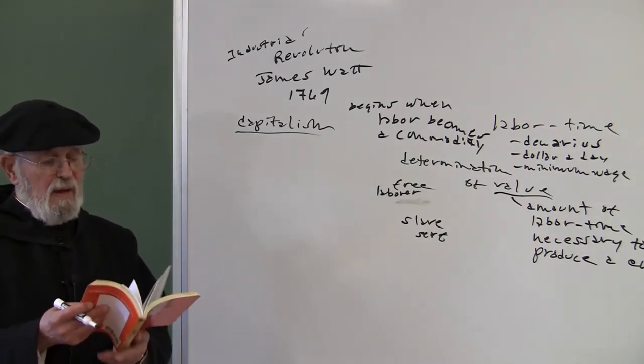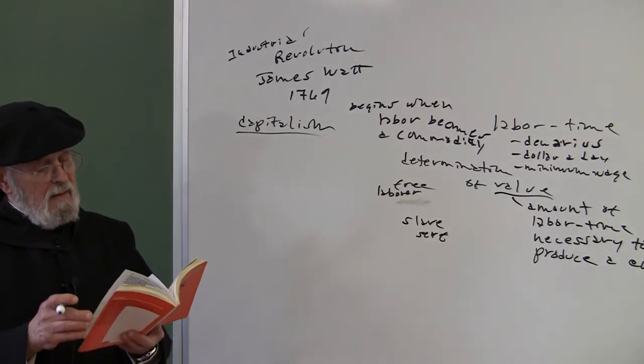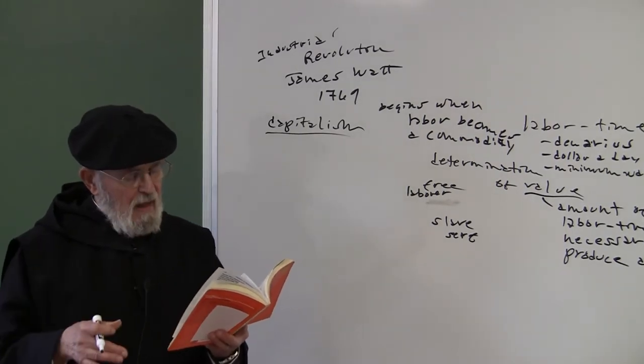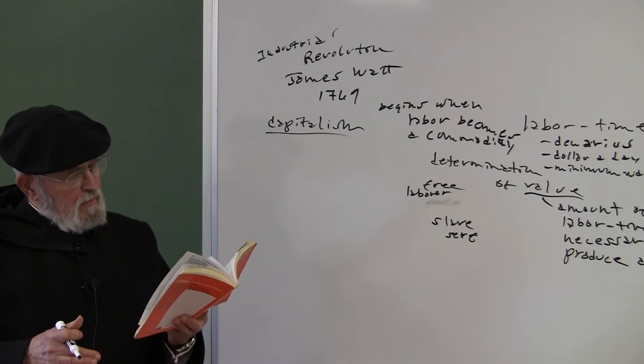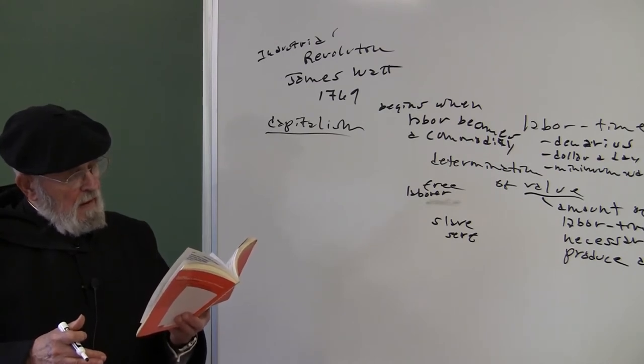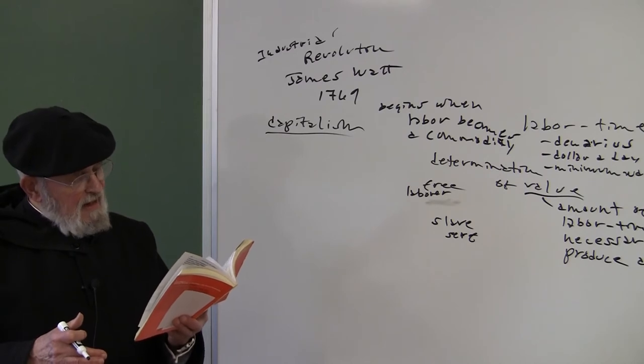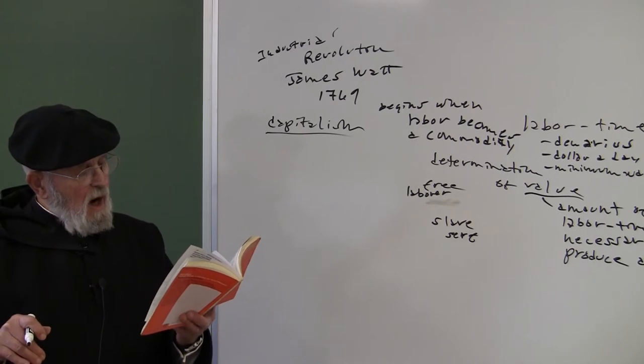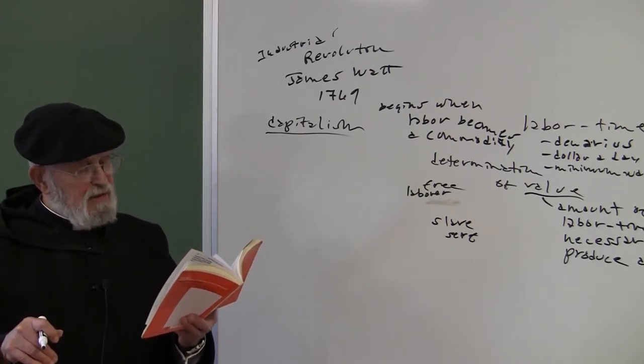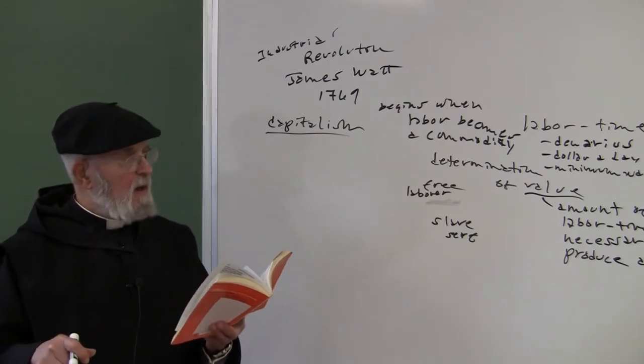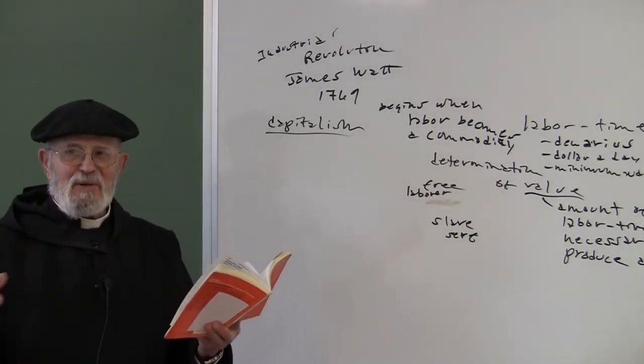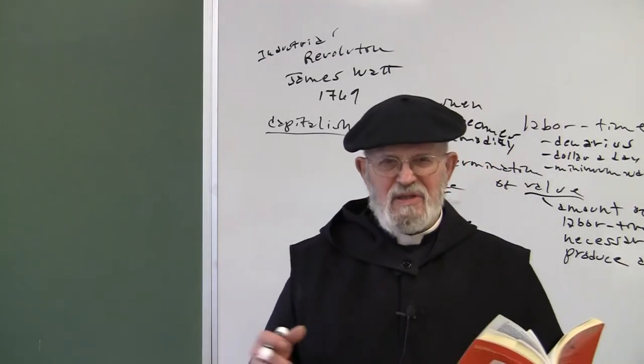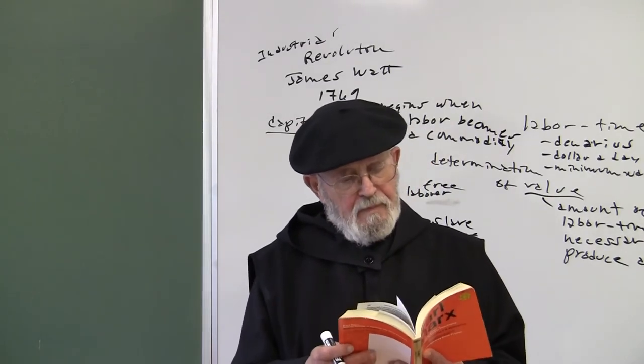Over on page 132. Down at the bottom of that second paragraph there. It is otherwise with capital. The historical conditions of its existence are by no means given with the mere circulation of money and commodities. We know what money is. Money is a process, it's a system of relations.